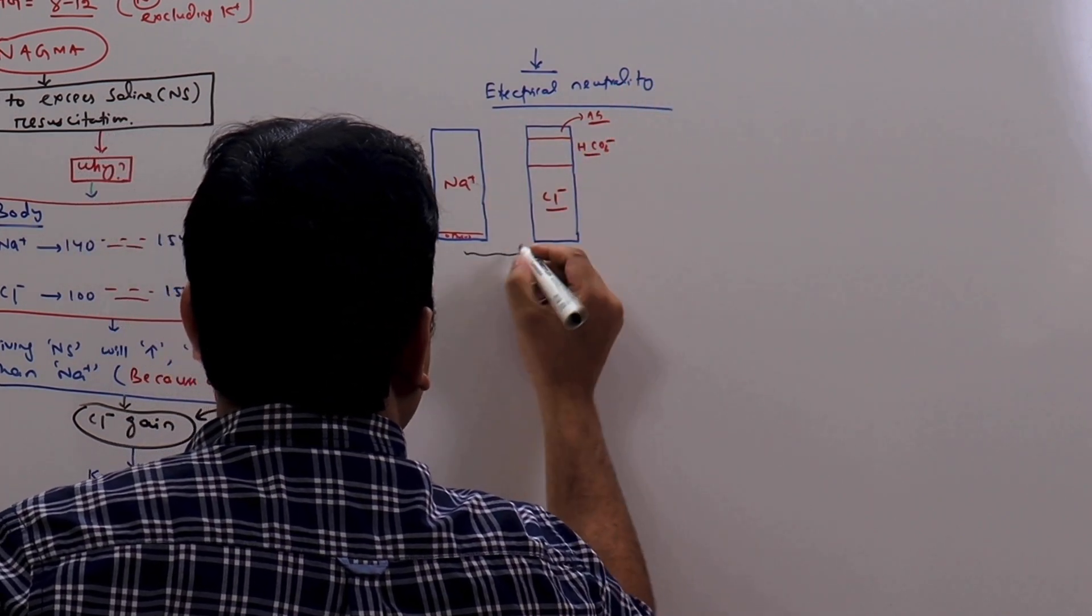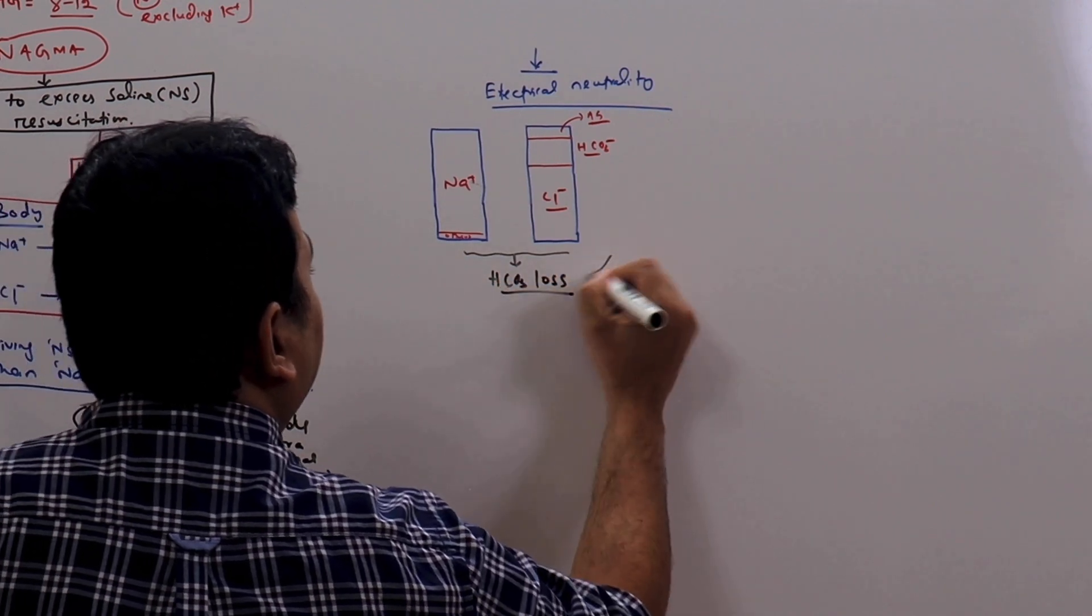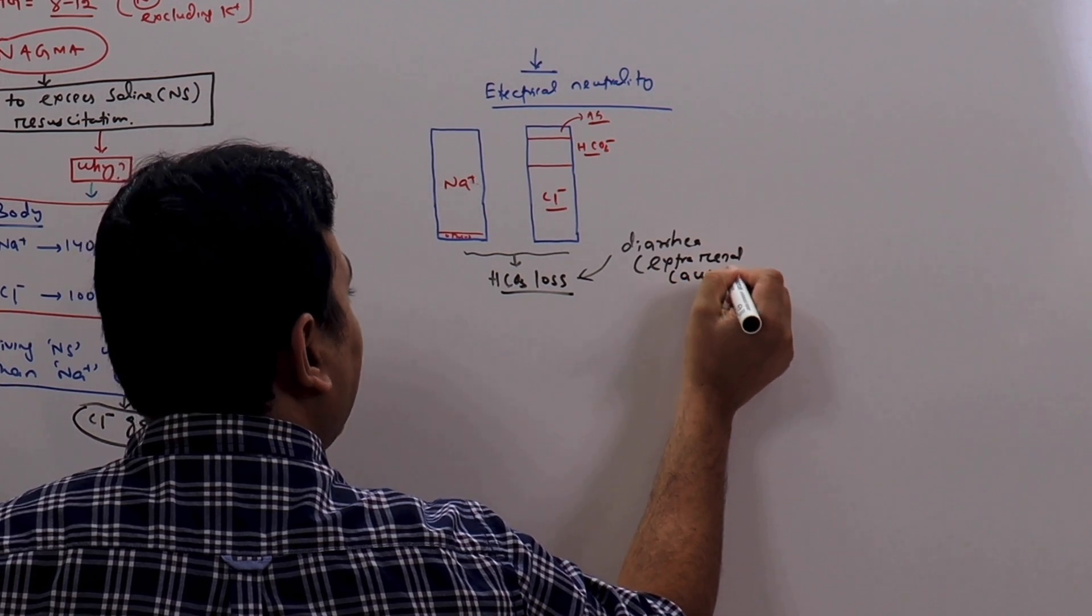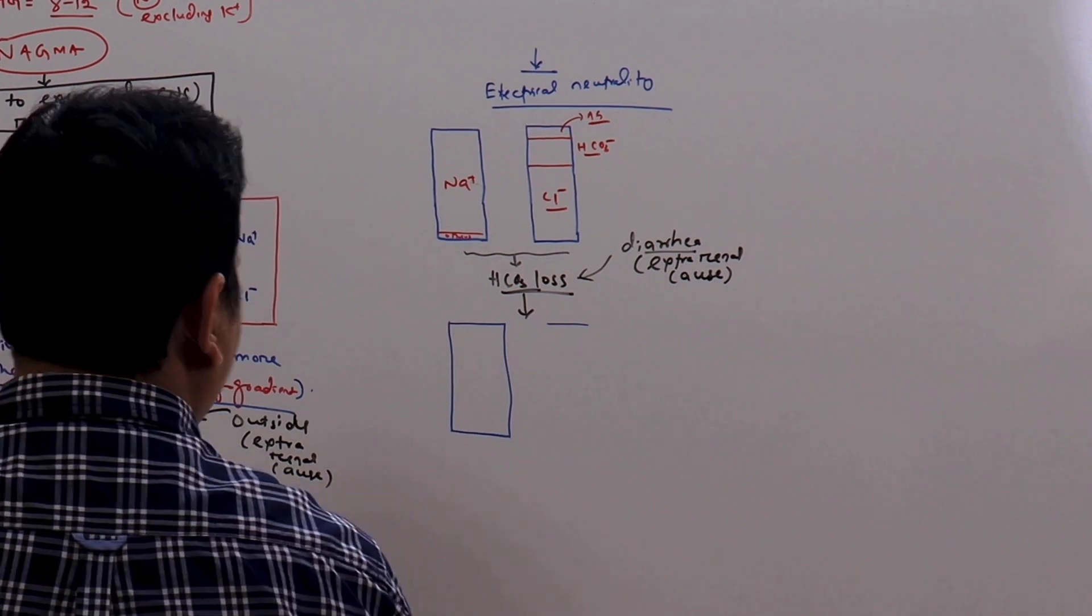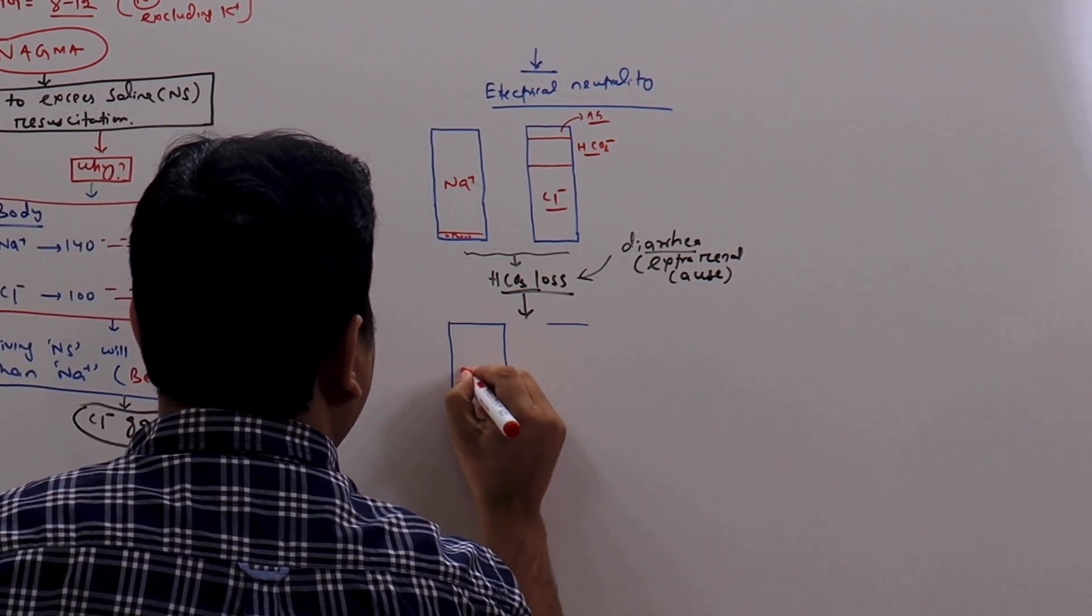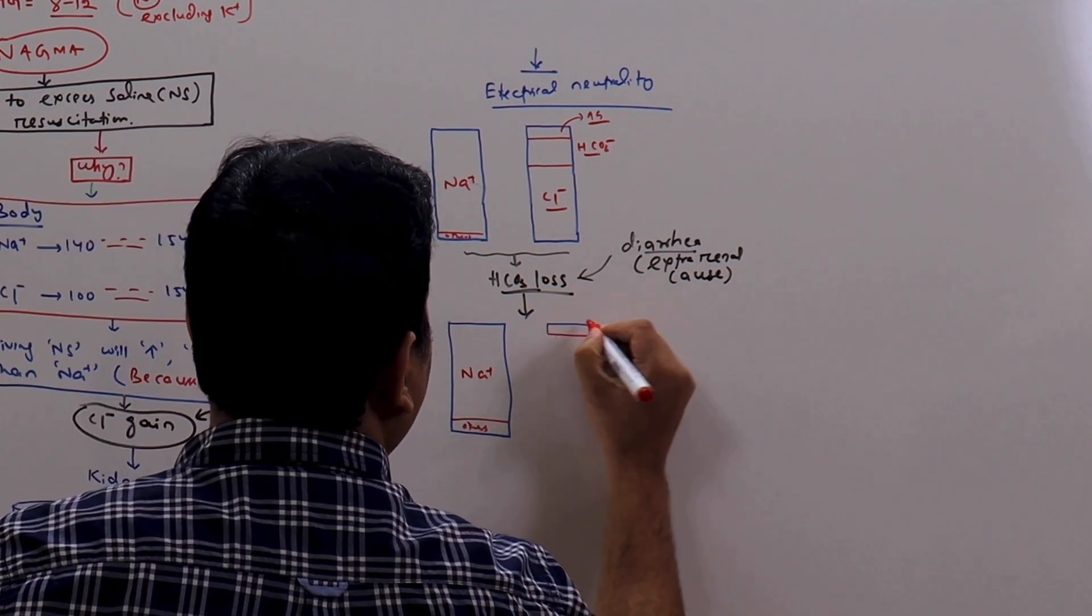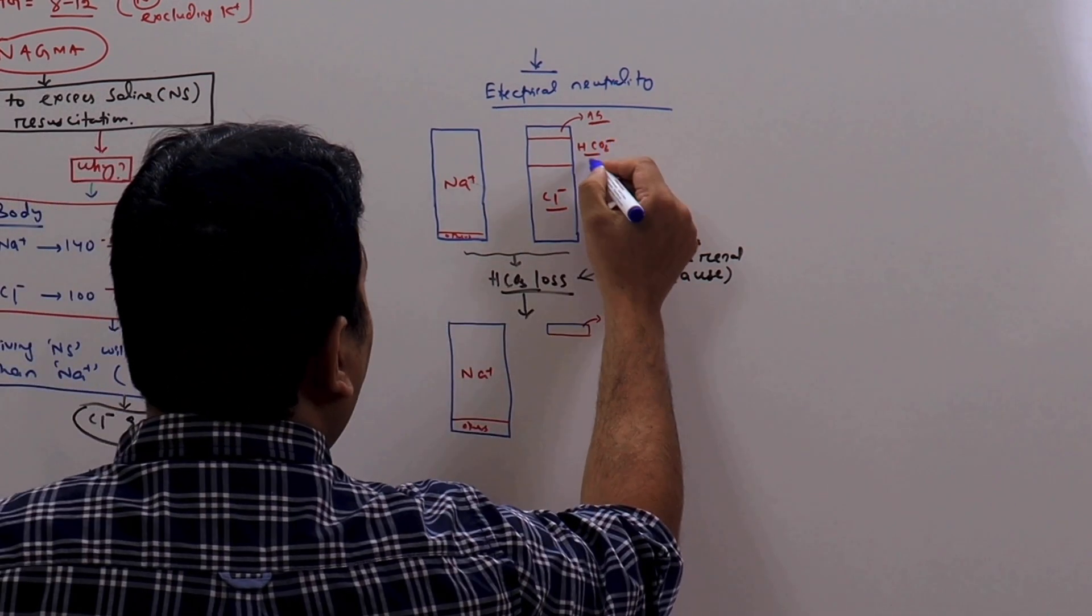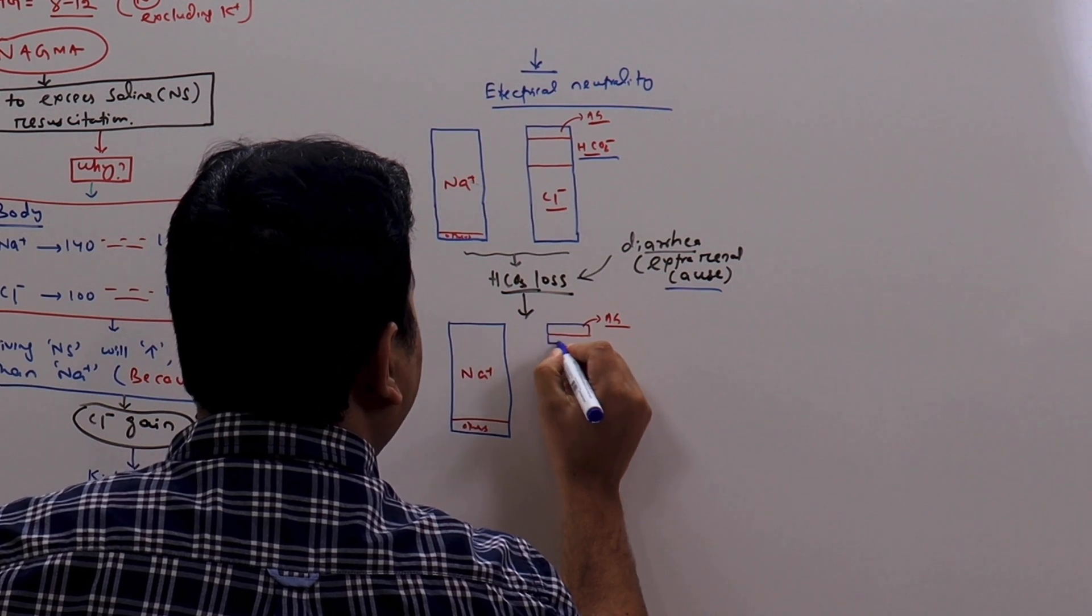In this situation, let us say there is a bicarbonate loss. Where it can happen? There is diarrhea. This is again external. We are discussing today only external cause. In diarrhea, there is bicarbonate loss. Everything is same: others, cations and sodium. In the anion part, anion gap remains normal because there is no additional acids from outside, but the bicarbonate is lost from outside, from diarrhea. So the bicarbonate level decreases.